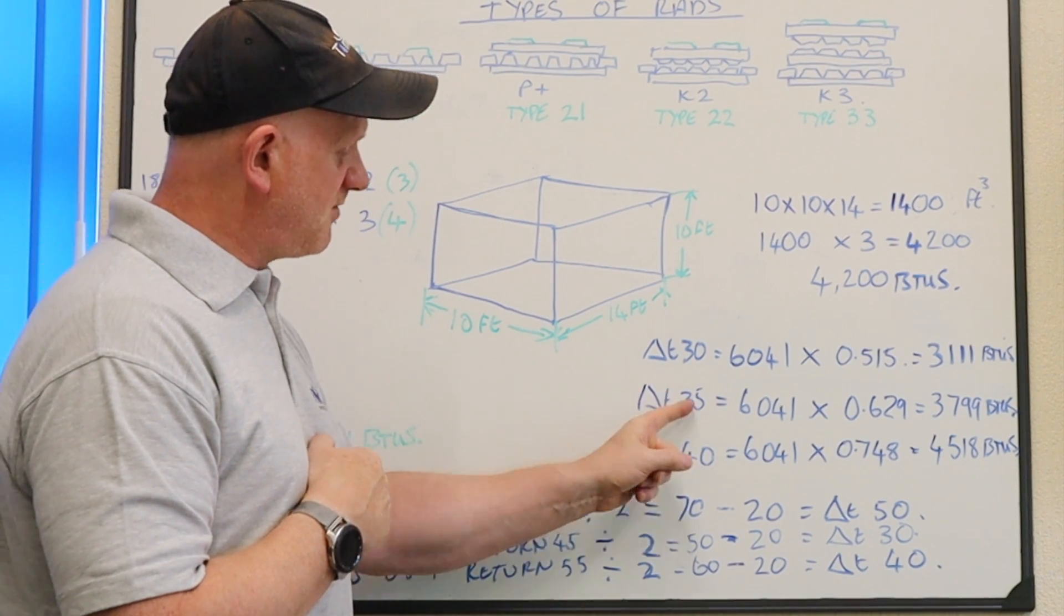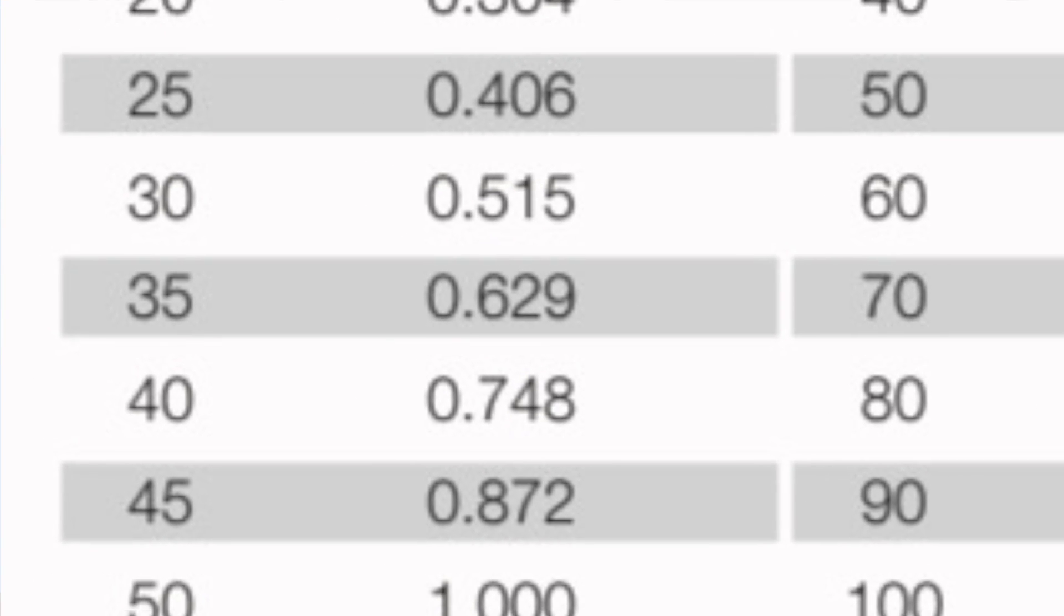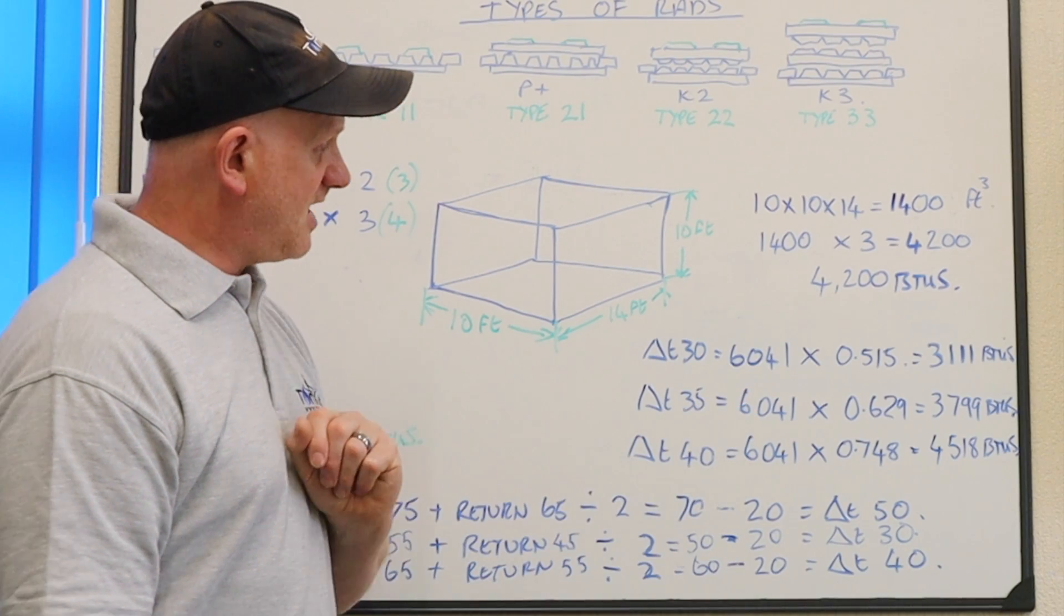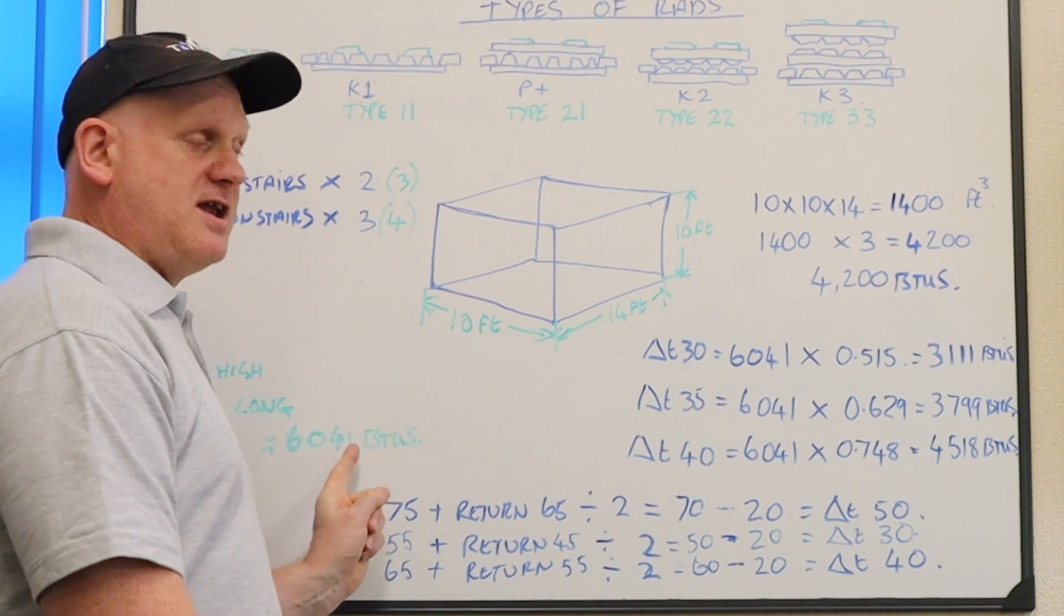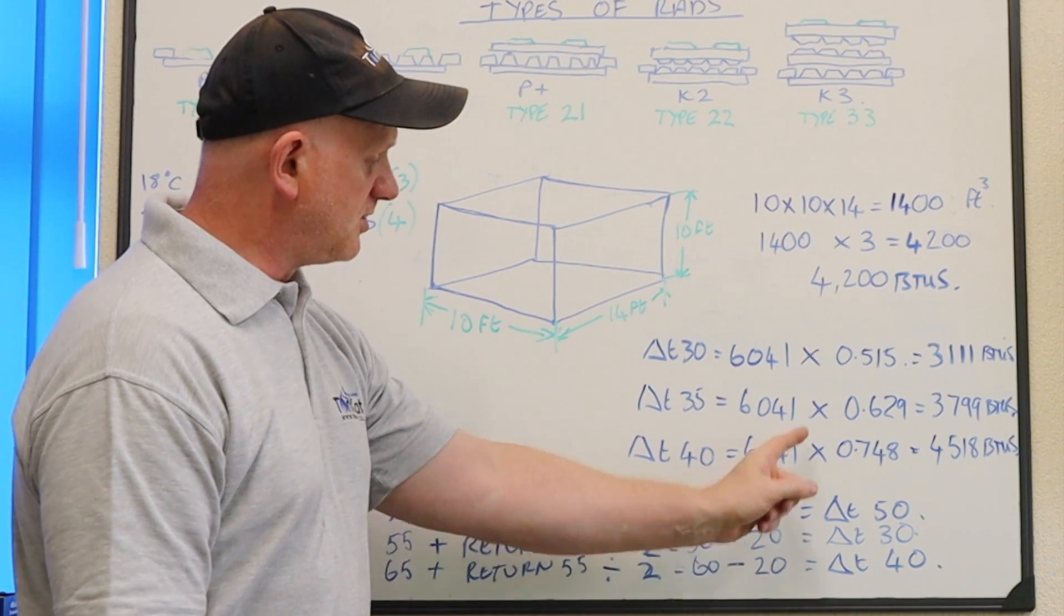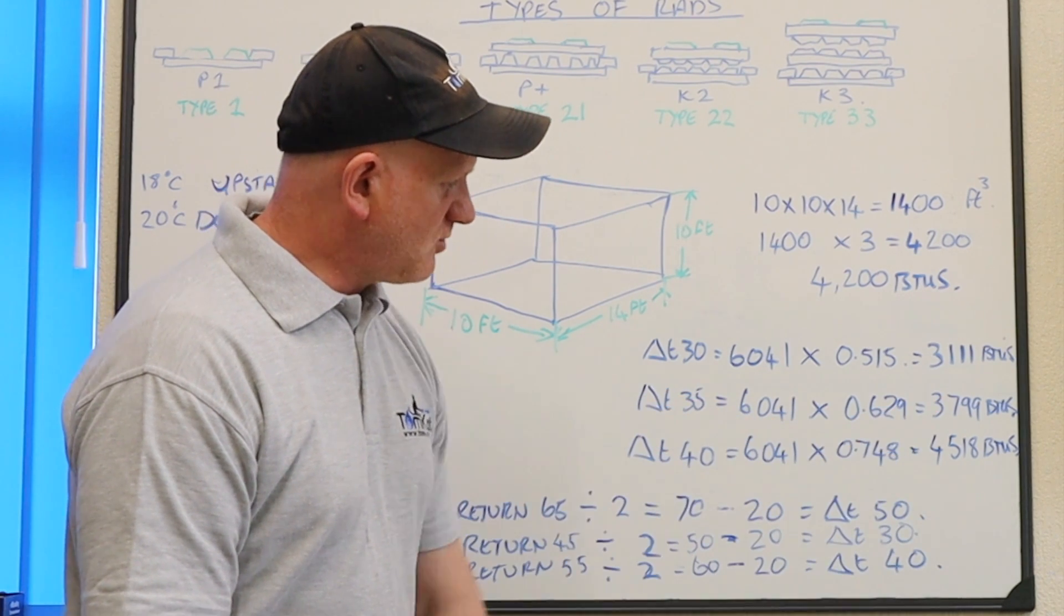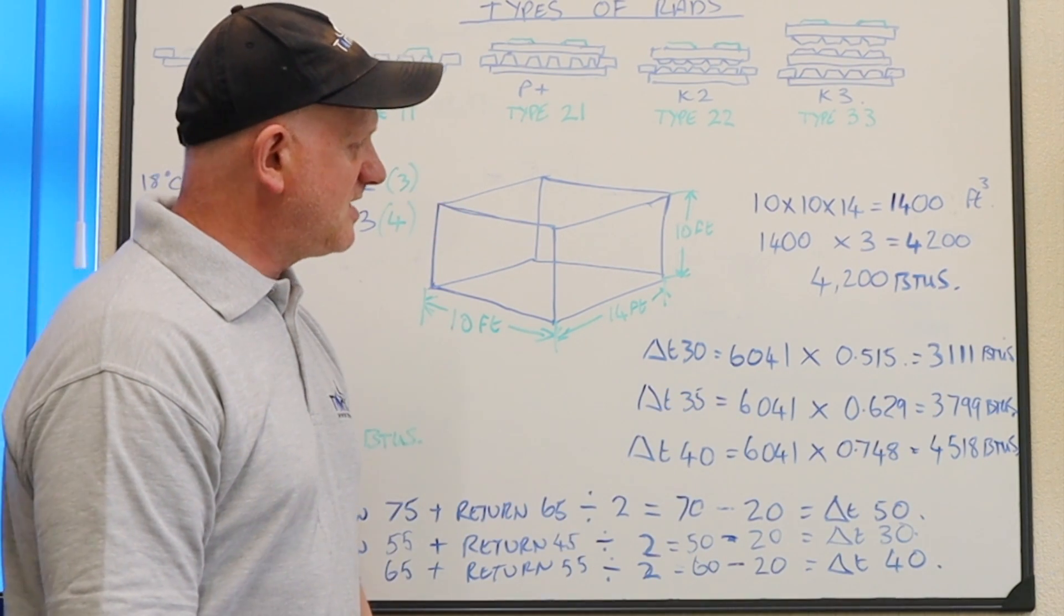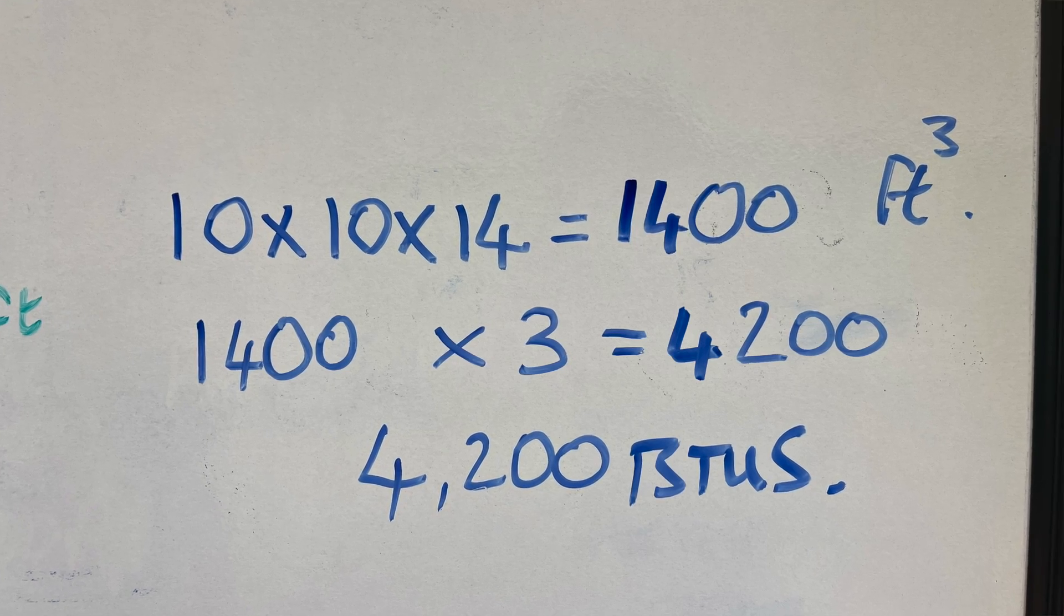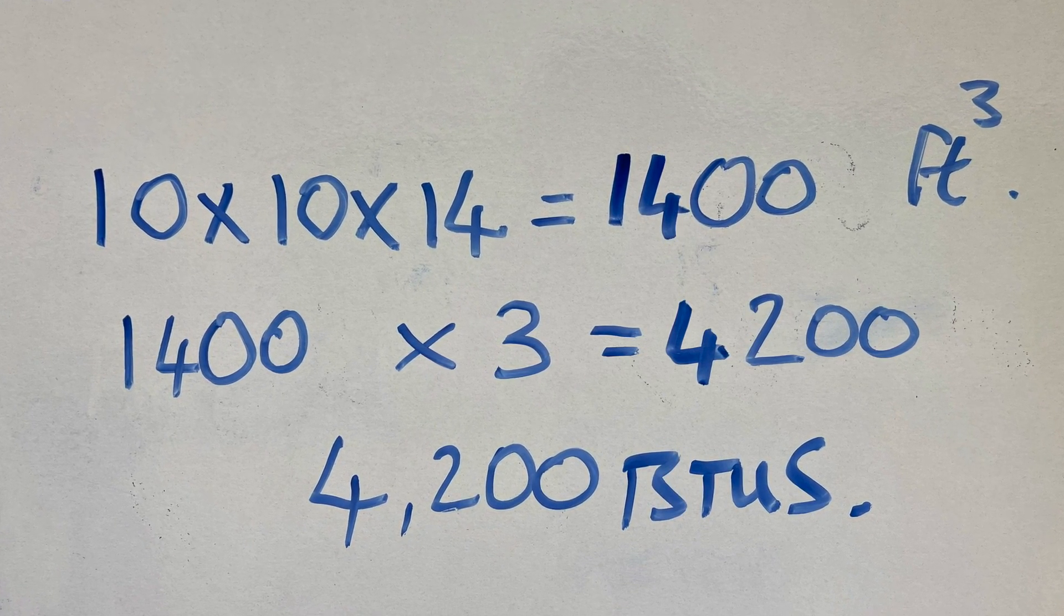Now if I do a delta T of 35, and again this tells me a delta T of 35, it tells me it's 0.629. So again if I take my BTUs, again from the radiator not from the room, it gives me 6041 times by 0.629, gives me 3799 BTUs. So for my delta T of 35, it ain't happening.